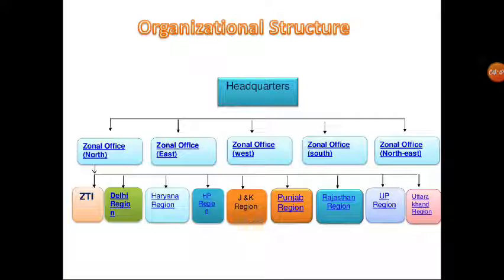The headquarter and organizational structure of FCI includes zonal offices across North, East, West, South, and Northeast India. The North zone covers New Delhi, Haryana, Himachal Pradesh, J&K, Punjab, Rajasthan, UP, and Uttarakhand regions. The South zone was initially in Chennai but was permanently shifted to New Delhi. Punjab is a major source of agricultural commodities, especially wheat, being the state of five rivers and agriculturally strong.